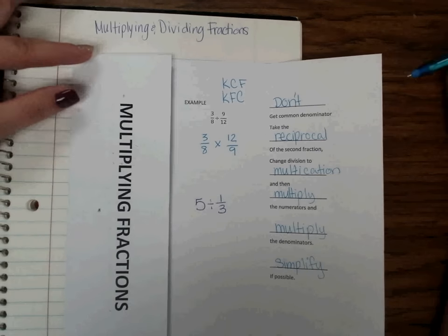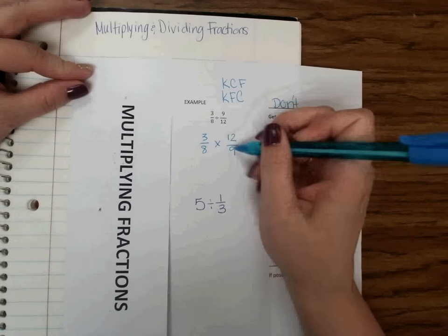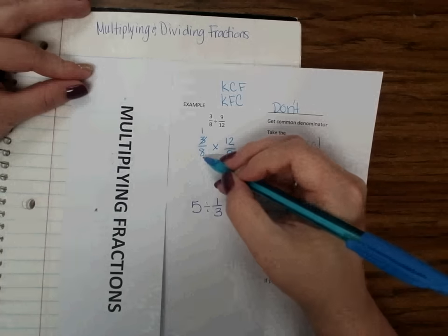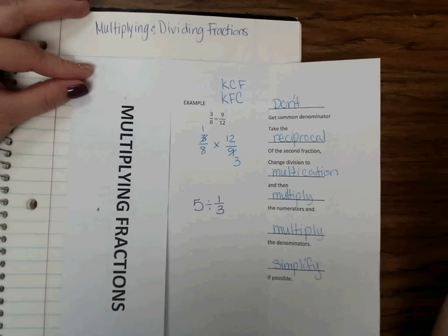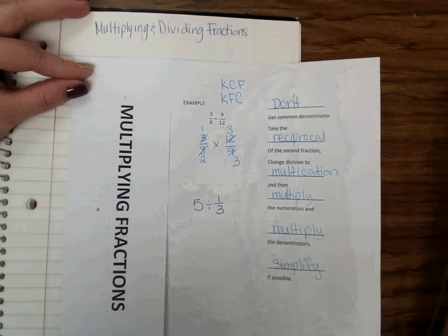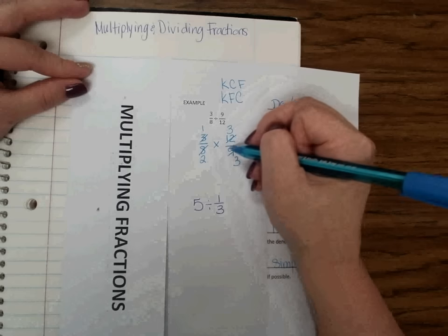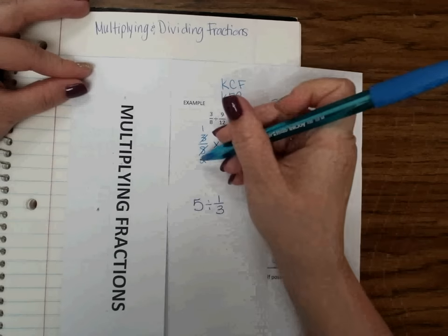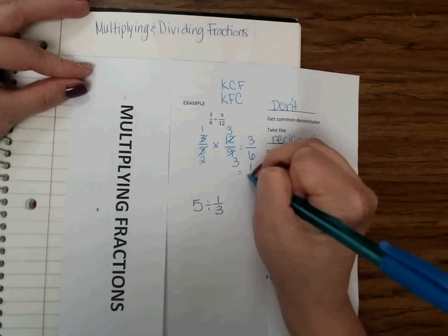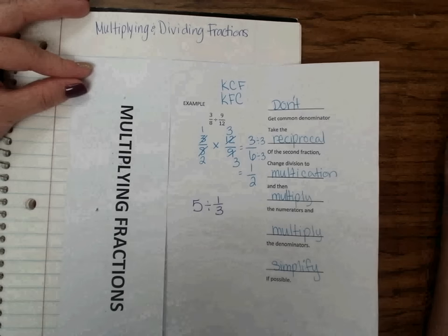I can cross cancel if I choose to. I can reduce this. 9 and 3, I can divide by 3. So that becomes 3, that becomes 1. 8 and 12, I can divide by 4. Because 4 times 2 and 4 times 3. And now I can multiply across. So 1 times 3 is 3, 2 times 3 is 6. And that equals 1 half when we simplify by dividing by 3.